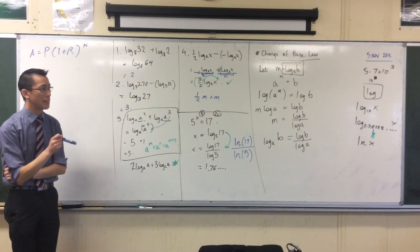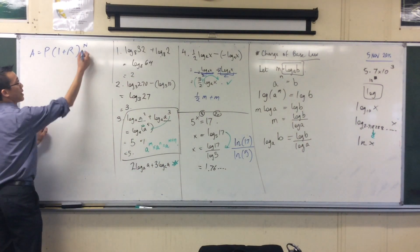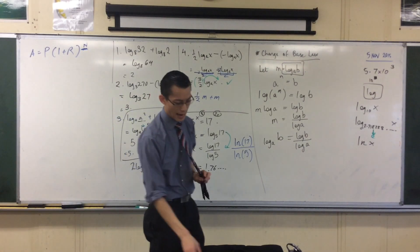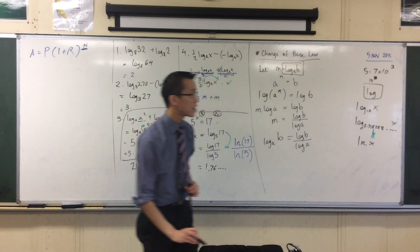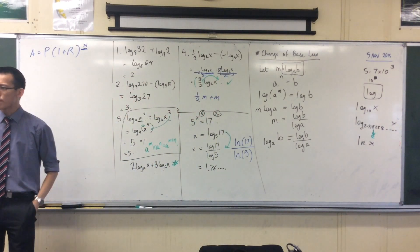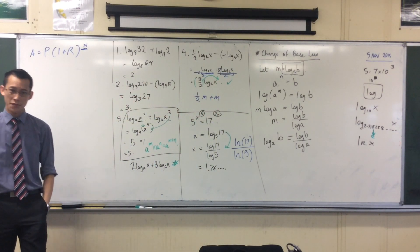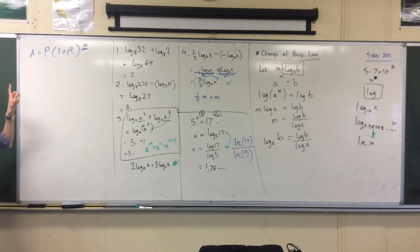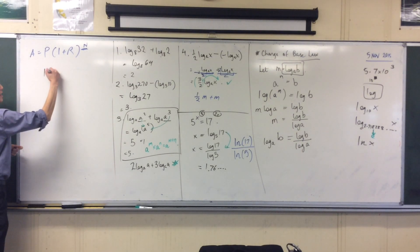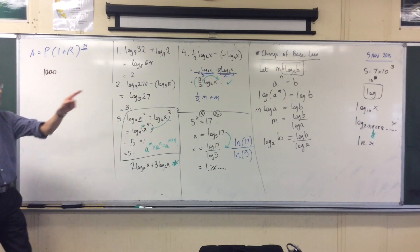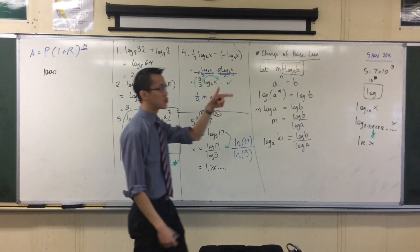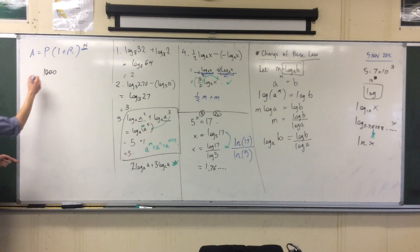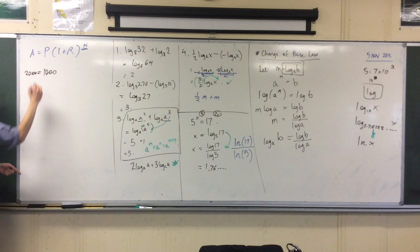Determine the number of years to the nearest year. So again, you're asking about N — that's what they want to know. Determine the number of years it will take an investment of $1,000. If you're investing $1,000, where does that belong in this formula? That's the principal. To grow to $2,000 — where's that going to go? That's the amount. That's where you're going to end up.